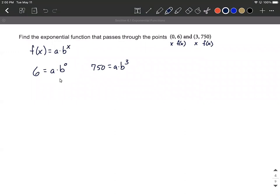Now looking at this, we have two separate equations, but this left equation is going to work out pretty nicely because we know that based on our exponent rules, anything raised to the zero power is going to equal one. So really this is saying six equals a multiplied by one, or that's the same thing as saying that a is six.